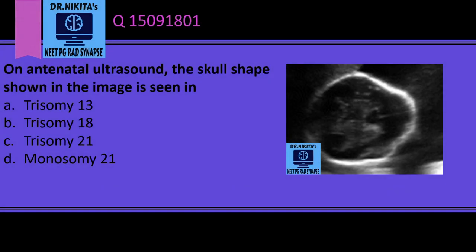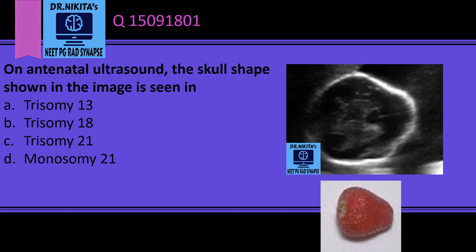On antenatal ultrasound, the skull shape shown in the image is seen in Trisomy 18. The shape of the skull is like a strawberry because there is a flattened occiput and pointed frontal bones. The pointed frontal bones are due to frontal lobe hypoplasia, and this is a feature of Trisomy 18, that is Edwards syndrome.